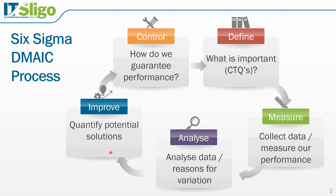Experimental design, also known as design of experiments or DOE, is the main statistical tool that we can apply in this phase. In experimental design we can make systematic changes to the process variables with a view to understanding their influence on the process performance.